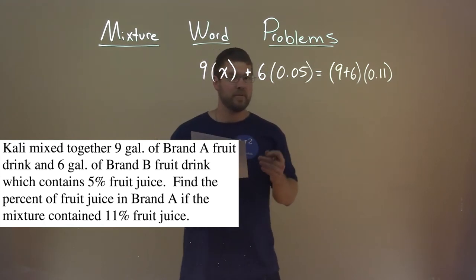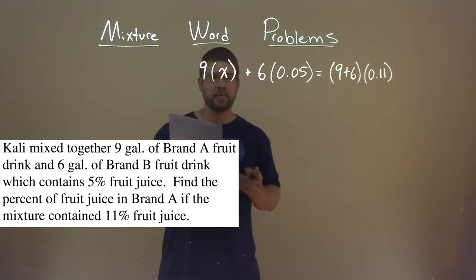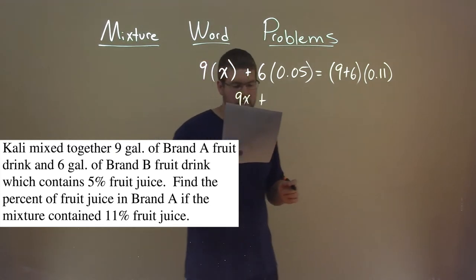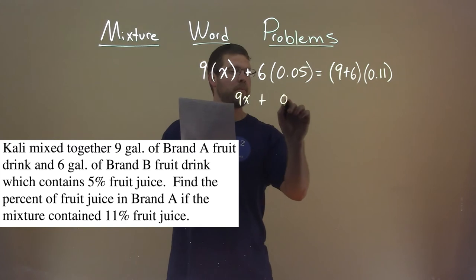Well, now we have an equation we need to solve. 9X, I'm just writing as 9X here, but plus 6 times 0.05 is 0.3.